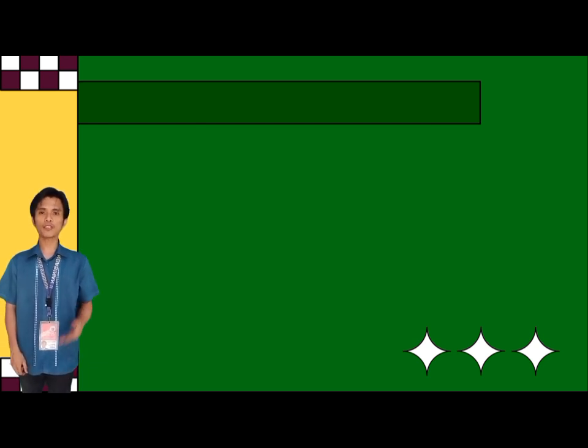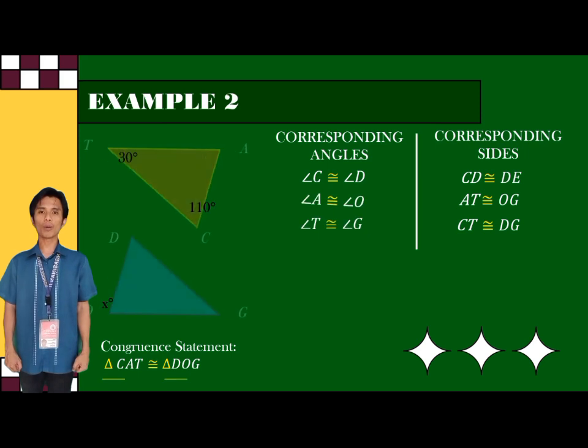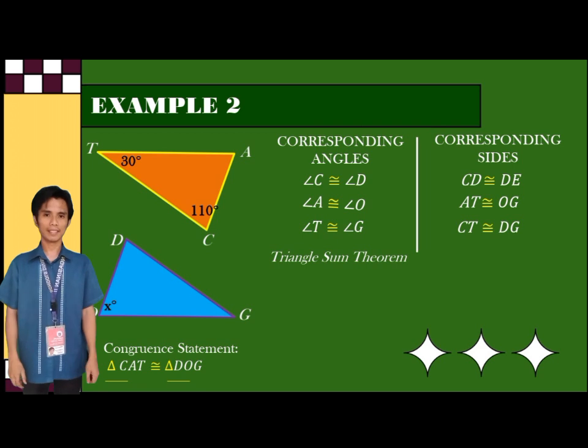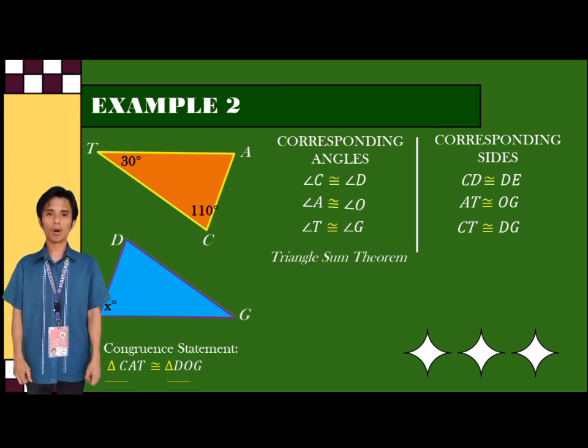And for our next example, we are now going to solve for the value of X. But in this example, only two angles of the triangle are given.